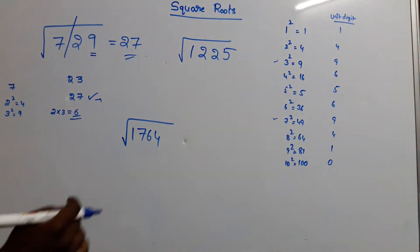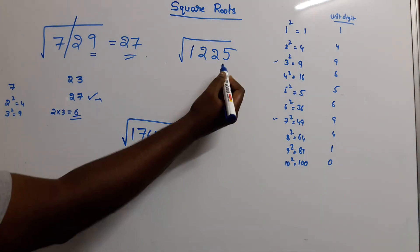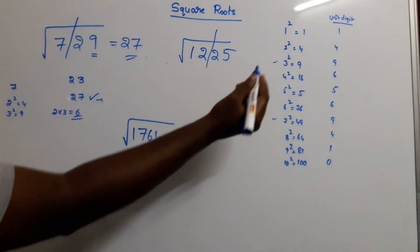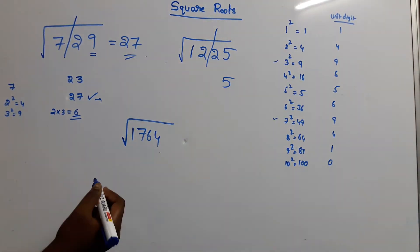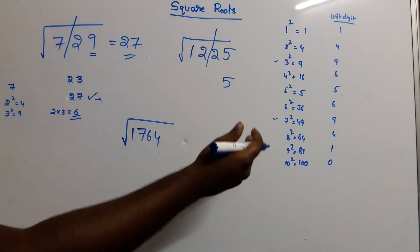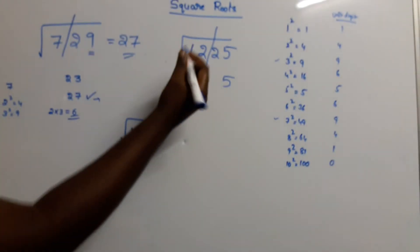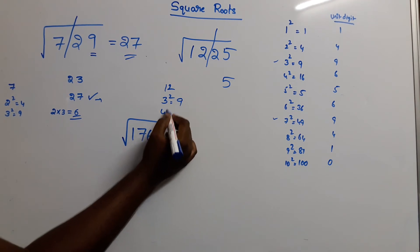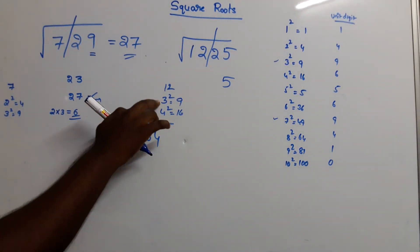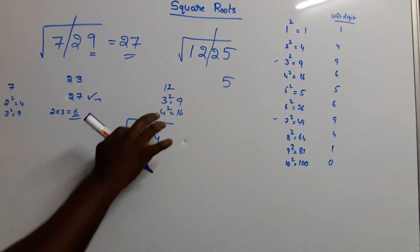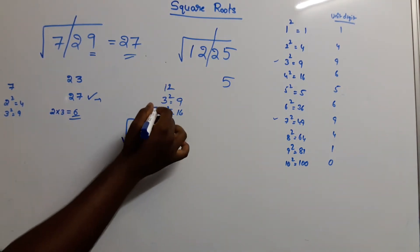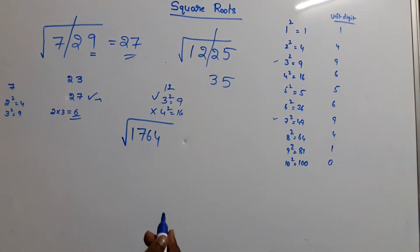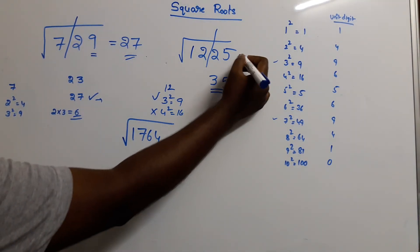Root of 1225. So 2 digits is 25. 5 is a square — 5 square ends in 5. Next, this is not a perfect square remainder. 3 square is 9, 4 square is 16. So 12 lies between 3 square and 4 square, and we take 3. So the answer is 3 and 5 — 1225 square root is 35.